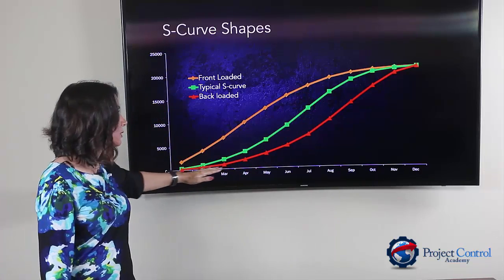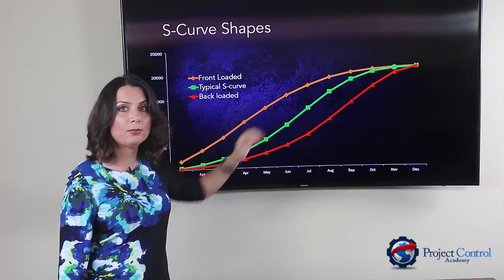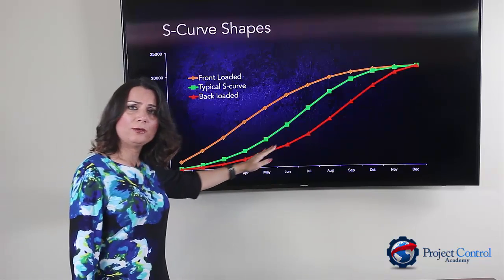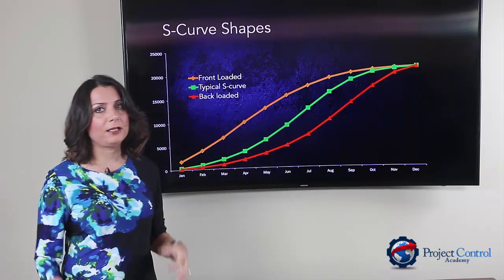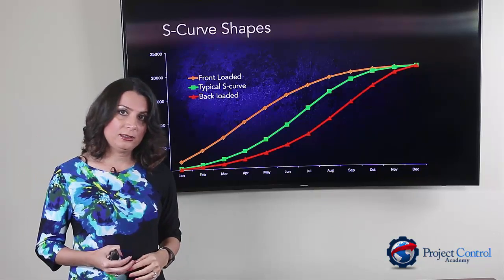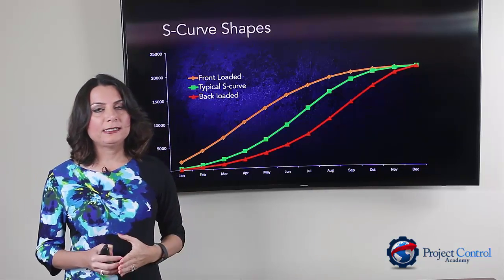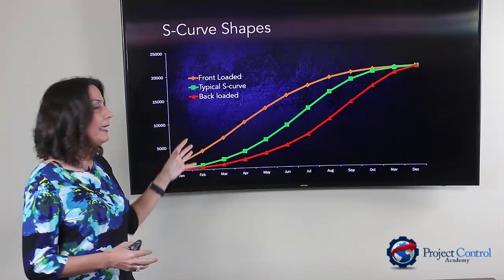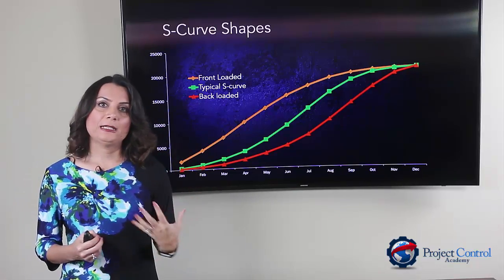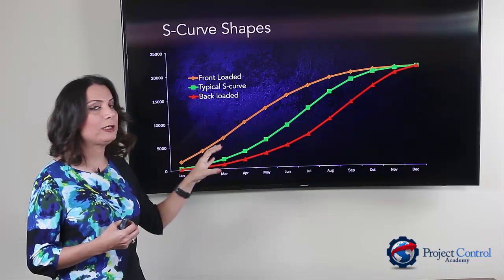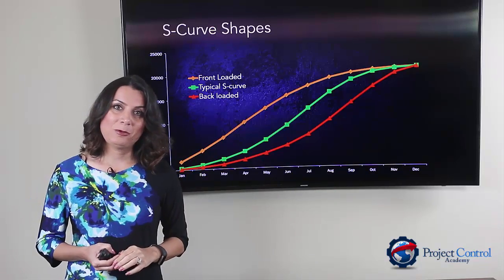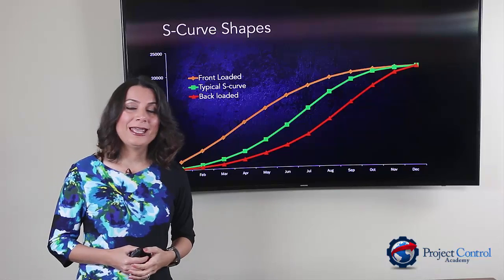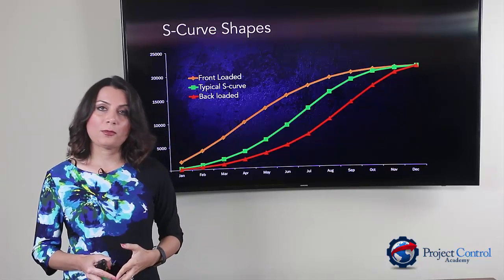The back-loaded curve starts very slowly and then ramps up toward the end. The green one is the typical S-curve — a shallow S-type curve that you will see in most projects. Make sure that you validate your plan for both front-loaded and back-loaded curves before you accept them as a baseline for comparison.